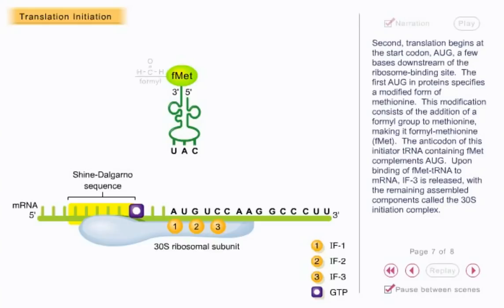The anticodon of this initiator tRNA, containing FMET, complements AUG. Upon binding of FMET tRNA to mRNA, IF3 is released with the remaining assembled components called the 30S initiation complex.